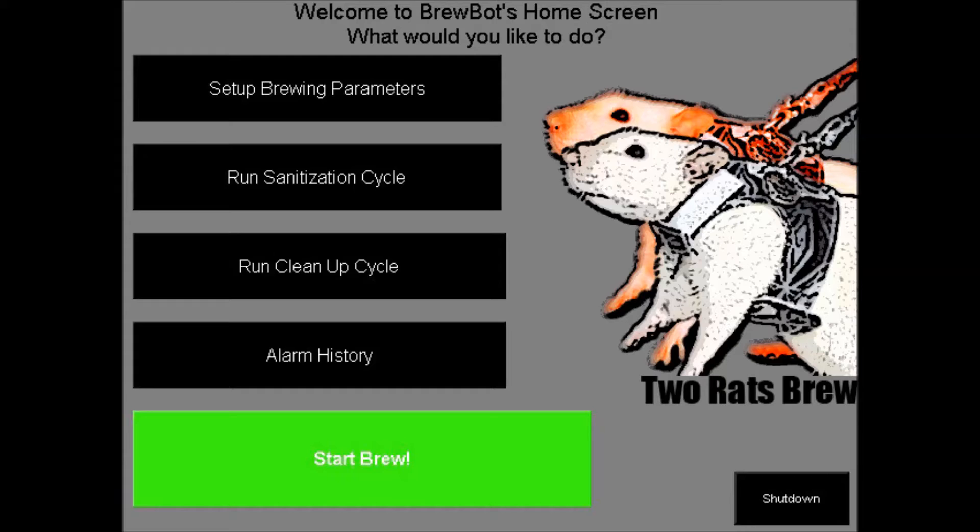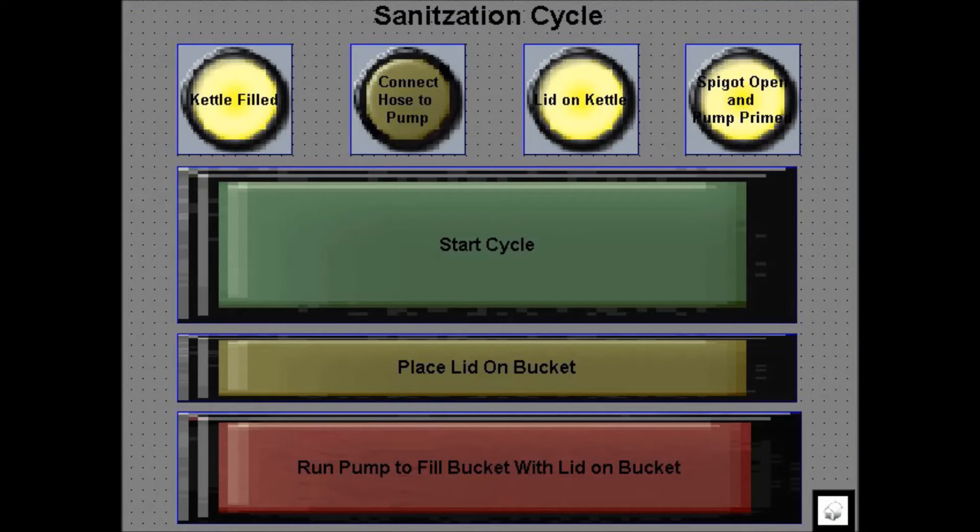Once the parameters are set, the user can run a sanitation cycle. The sanitation display guides the user through a checklist of interactive buttons. One verifies the kettle is filled with sanitized water. Another verifies that the outlet hose is connected to the pump. Next, another verifies that the lid is on the kettle. And lastly, that the spigot is open and the pump is primed. After, and only after these are selected, can you press the start cycle.